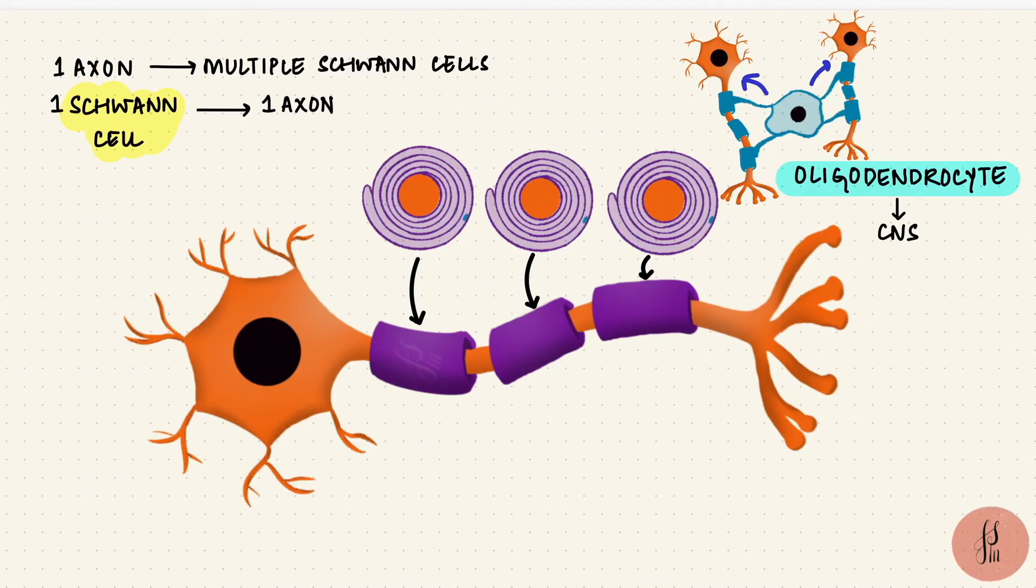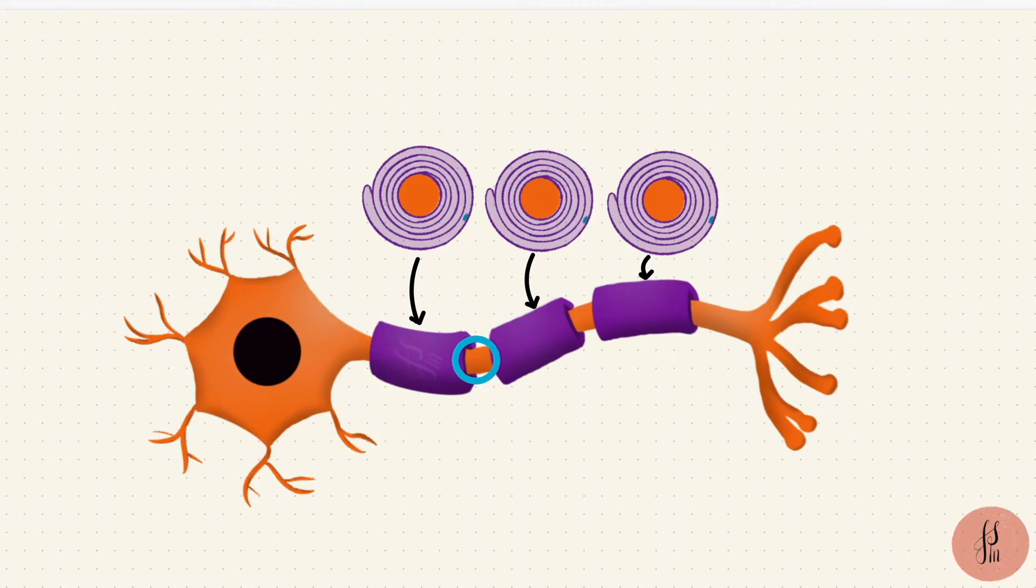Since the Schwann cells myelinate a short portion of the axon, in between the segments there will be small gaps. These are called the nodes of Ranvier.